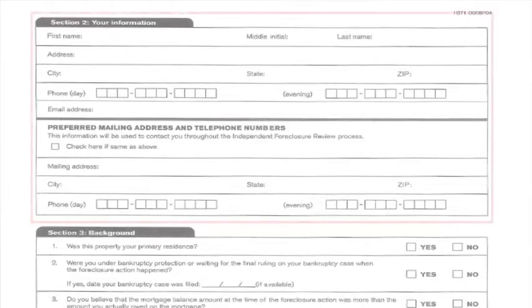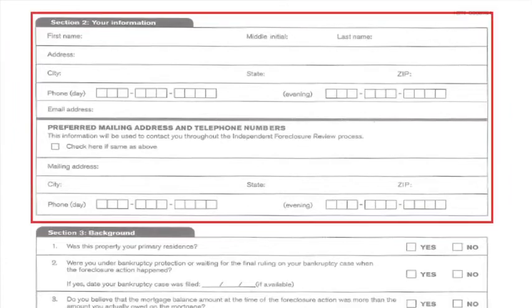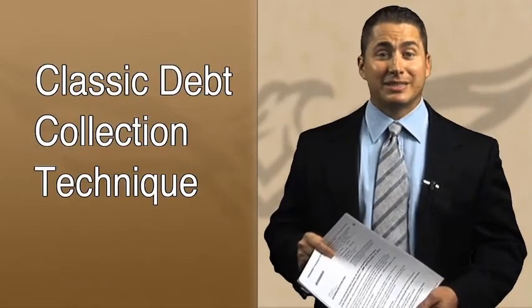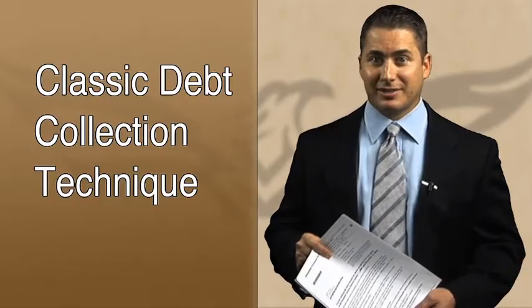There has been testimony provided to the U.S. Senate that warns against your information listed in Section 2 being used by lenders, as it was stated, to collect an otherwise uncollectible deficiency judgment. Homeowners are given no assurance that information they give to the consultants in Section 2 will not be used against them by the servicers. And the testimony goes on to refer to it as a classic but sleazy bait-and-switch collection technique.